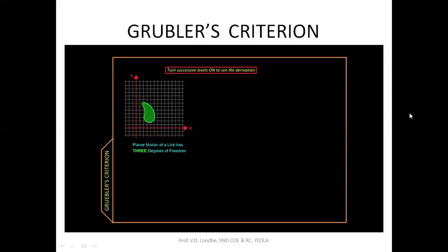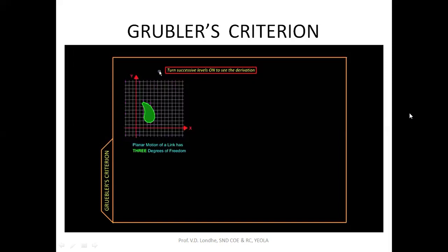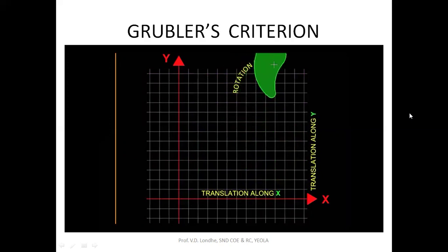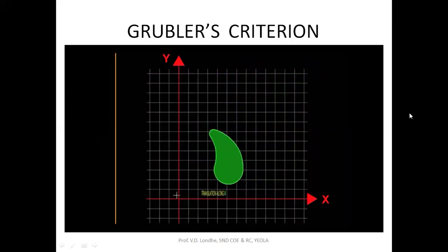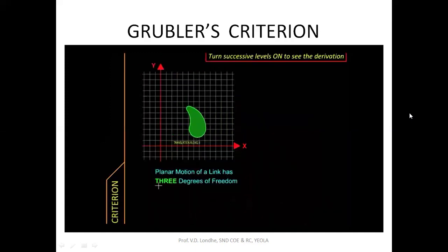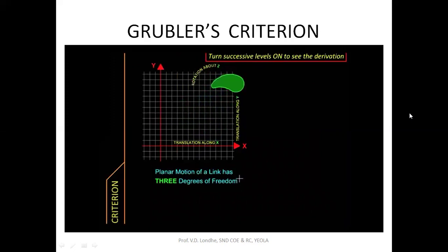A mechanism consists of links connected with pairs. We will see the overall effect of links and pairs on the mechanism, starting with a single link in a planar or two-dimensional mechanism — a link in the x-y plane. You can imagine this as a book placed on a table. There are only three things this body can do: translate along x, translate along y, or rotate about the z-axis. These three independent motions mean the body has three degrees of freedom.